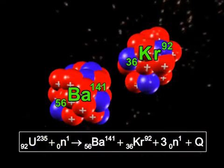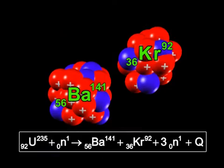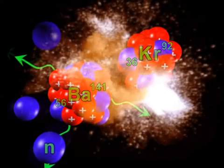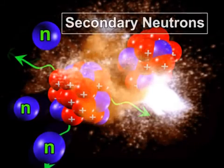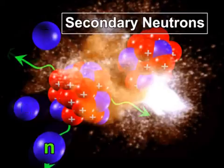The neutrons produced after fission are called secondary neutrons.